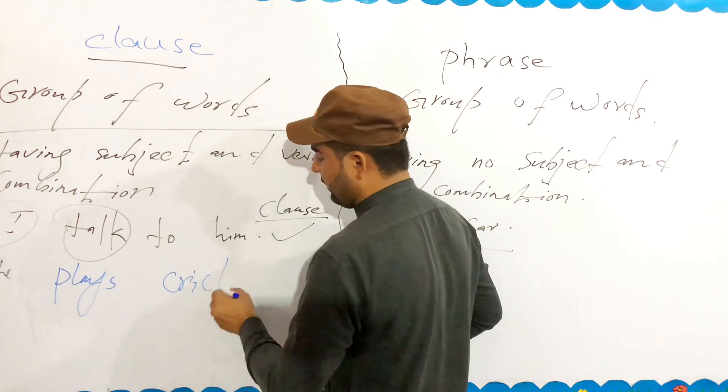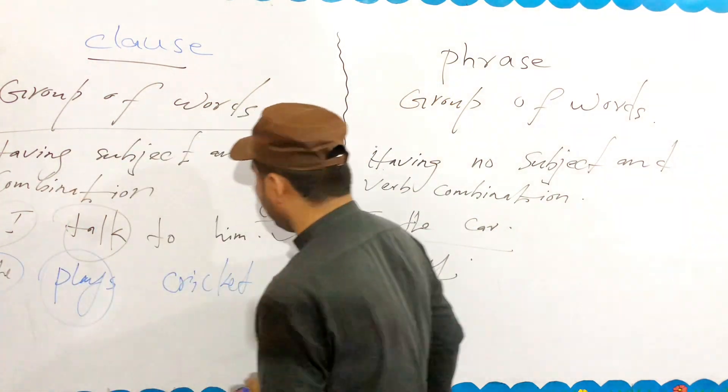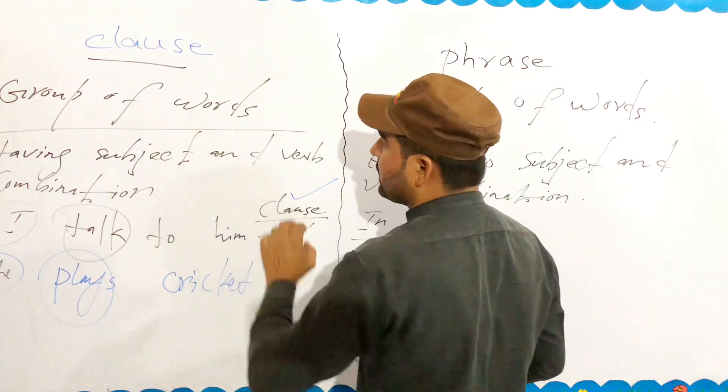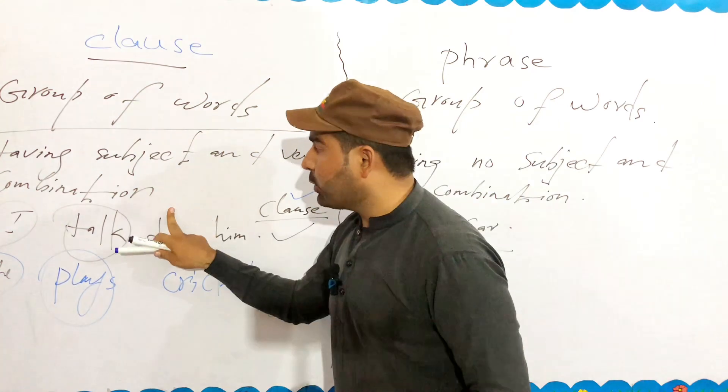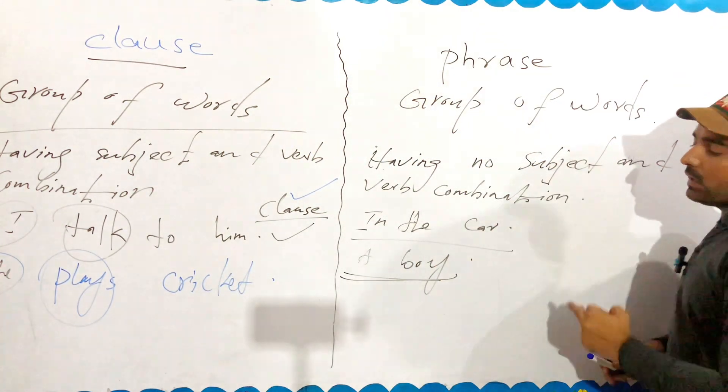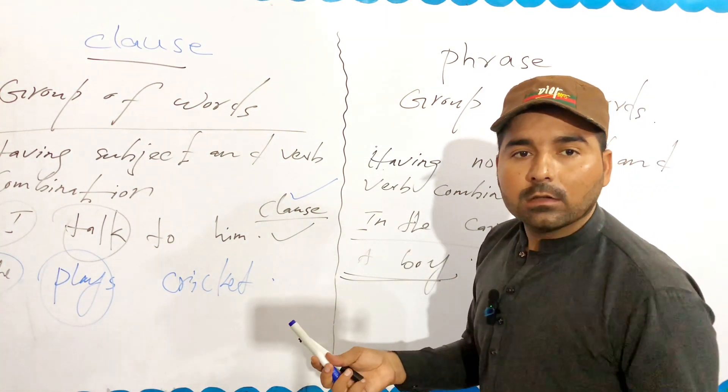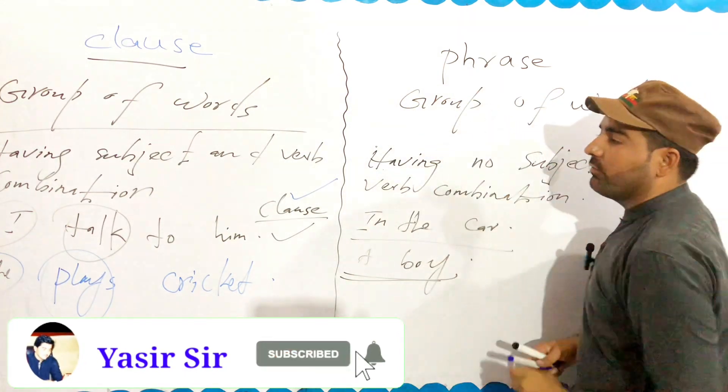Phrase kya hai? Group of words. Clause kya kehte hai? Jahan subject aur verb combination ho gaya, yeh aapka kya ho gaya? Clause. So yeh hi hota hai. Just understand one thing students: clause means group of words having subject and verb combination. Phrase means group of words having no subject and verb combination. In the car, beautiful car. Got that? So this is called clause and this is called phrase, guys.